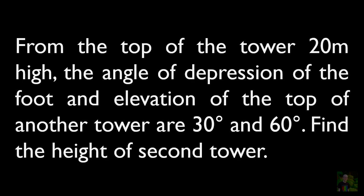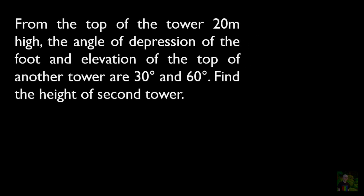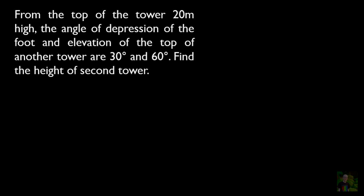The second question says: from the top of a tower 20 meters high, the angle of depression of the foot and the angle of elevation of the top of another tower are 30 degrees and 60 degrees respectively. Find the height of the second tower. We're going to solve this by drawing a diagram, breaking the question into parts so it's easy to understand.